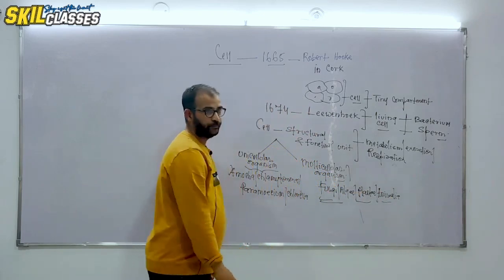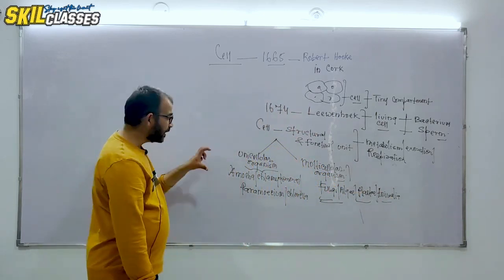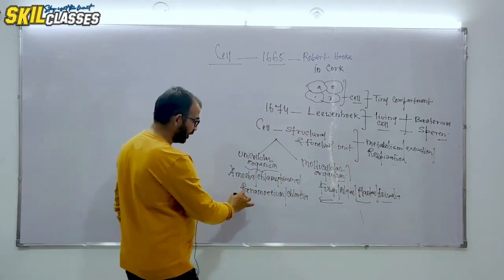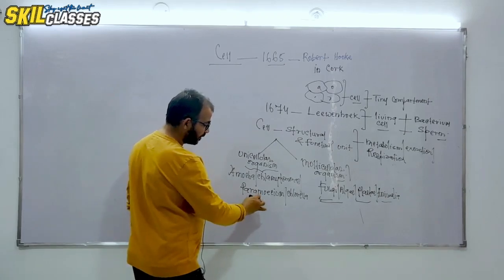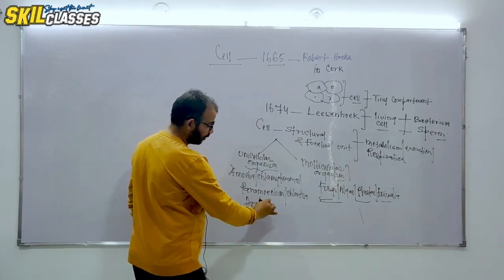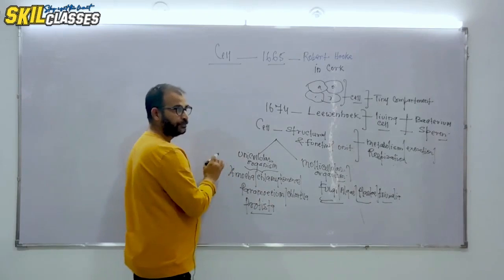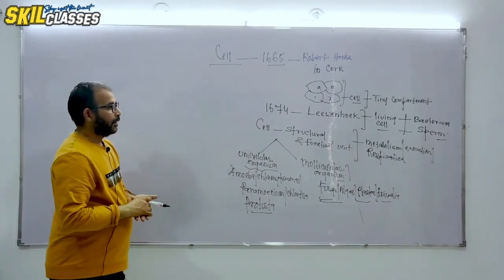So unicellular organisms are present only exclusively in Protista. Protista are unicellular organisms.